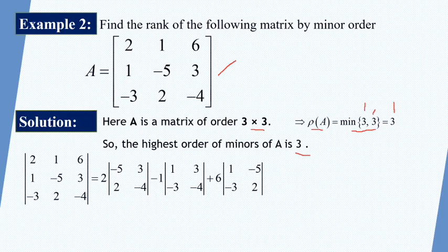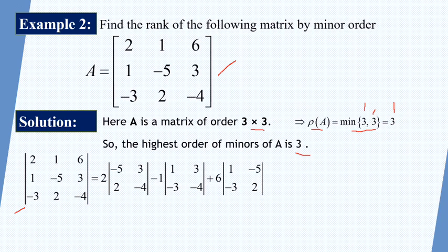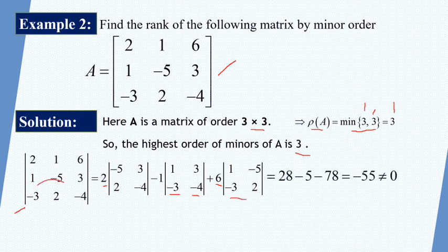We find the determinant of this matrix by expanding through the first row: 2·(−5·(−4) − 3·2) − 1·(1·(−4) − 3·(−3)) + 6·(1·2 − (−5)·(−3)). On solving, we get 28 − 5 − 78, which equals −55, and this is not equal to 0.